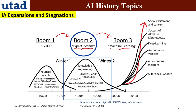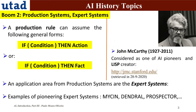In Boom 2, we can see that it covers the periods of the 80s and 90s. The main part is knowledge engineering, and some important languages like Prolog, Lisp, and expert systems. So Boom 2 is associated mainly with production systems and expert systems.